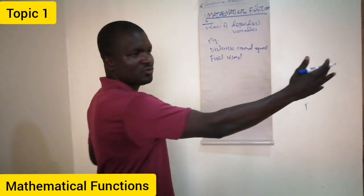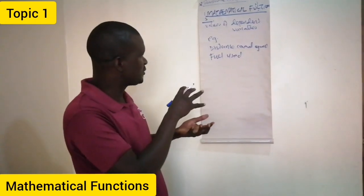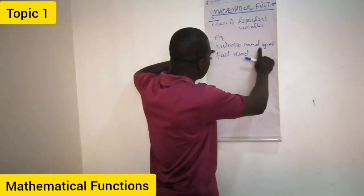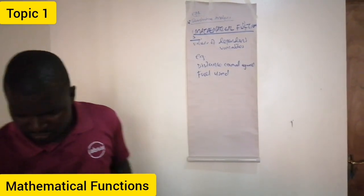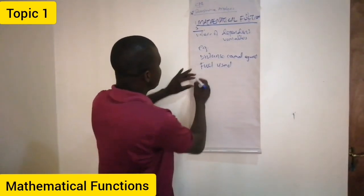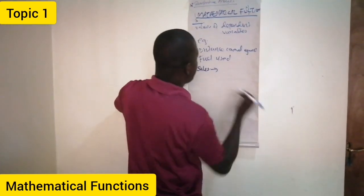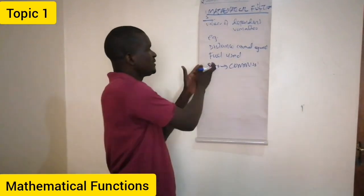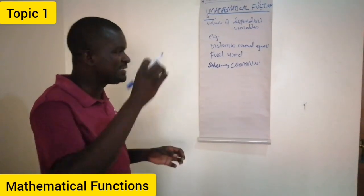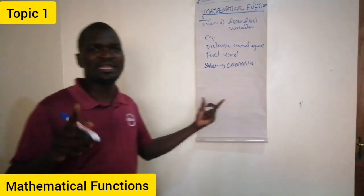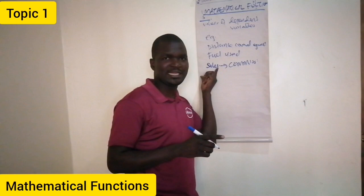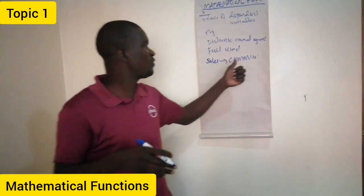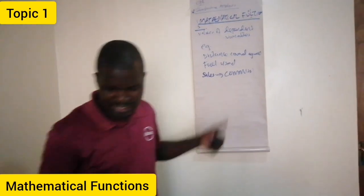So the values of the dependent variable are determined by the independent variable. The distance will determine the fuel which is being used. Another example: consider sales against commission. For those people who are commission-based, what you earn depends on what you have sold. The independent variable is sales, and the dependent variable is your commission. If you don't sell anything, you earn no commission or little commission — commission depends on sales.